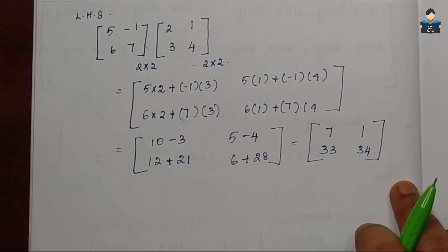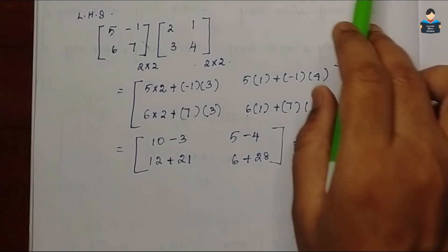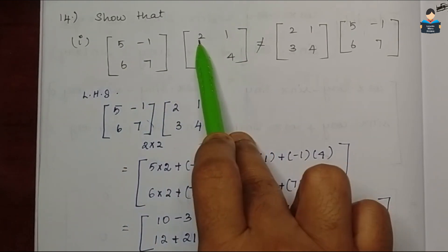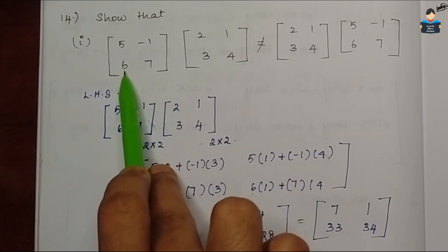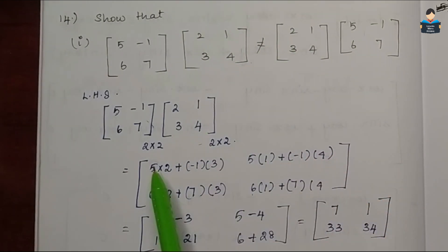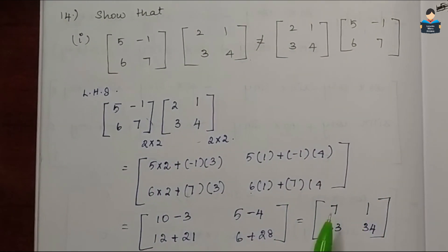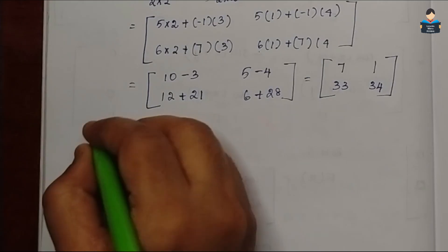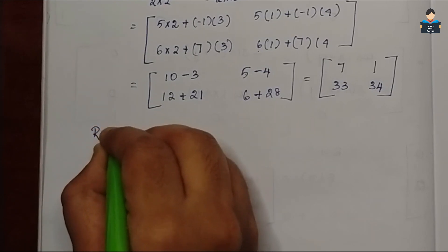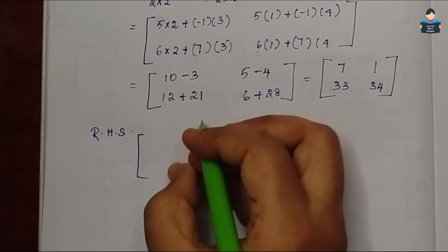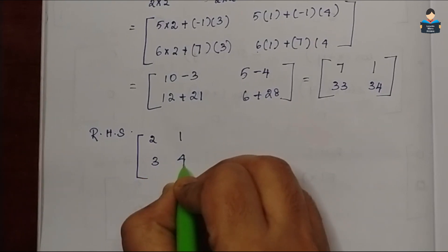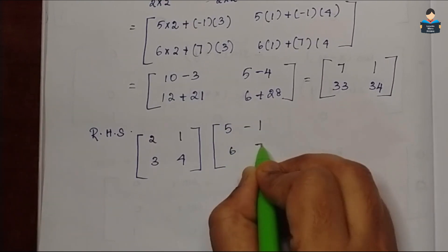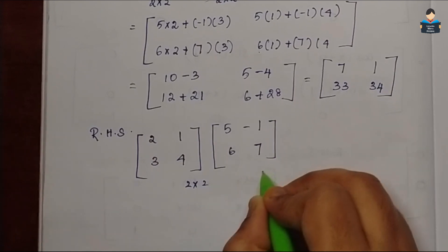Now on the RHS side we need to multiply the matrices in the reverse order. So RHS is the matrix [2, 1; 3, 4] multiplied by [5, −1; 6, 7]. This is again a 2×2 matrix multiplication. So we have first row, first column; first row, second column; second row, first column; second row, second column.